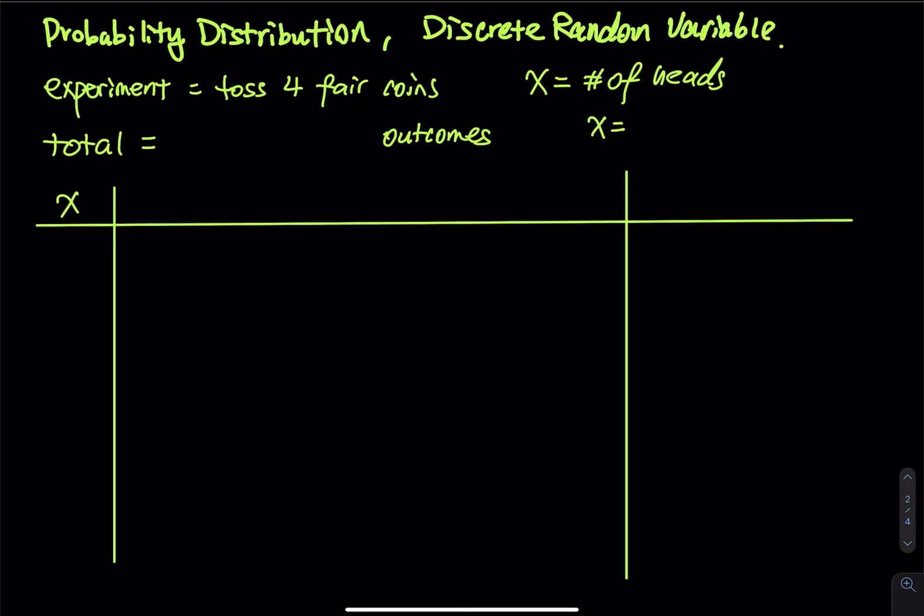This video I am going to use an experiment to explain probability distribution and discrete random variables. So my experiment is I toss four fair coins. Toss four fair coins and I want to let the random variable X be the number of heads.